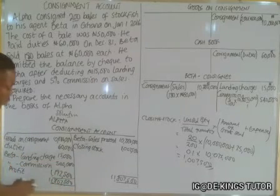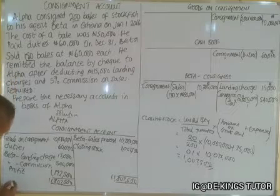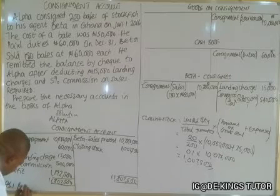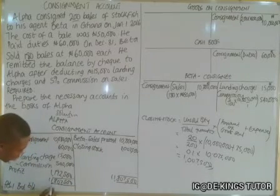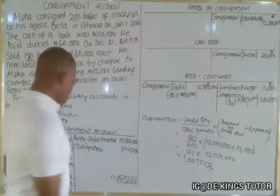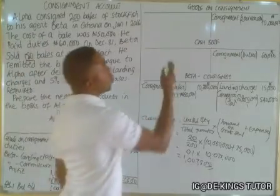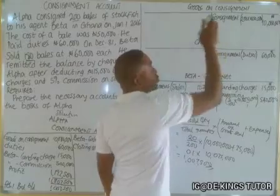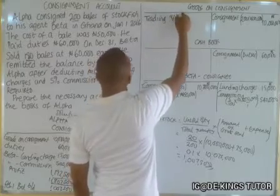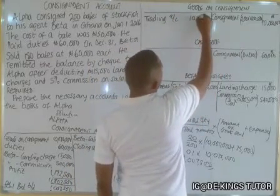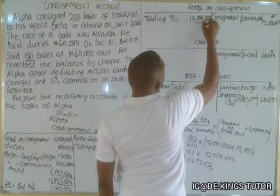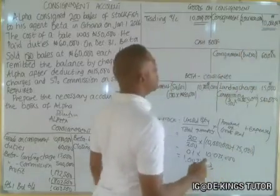Now we close the goods on consignment account. The goods on consignment account is closed to the trading account. We write the transfer to the trading account at 10,000,000, closing that account.